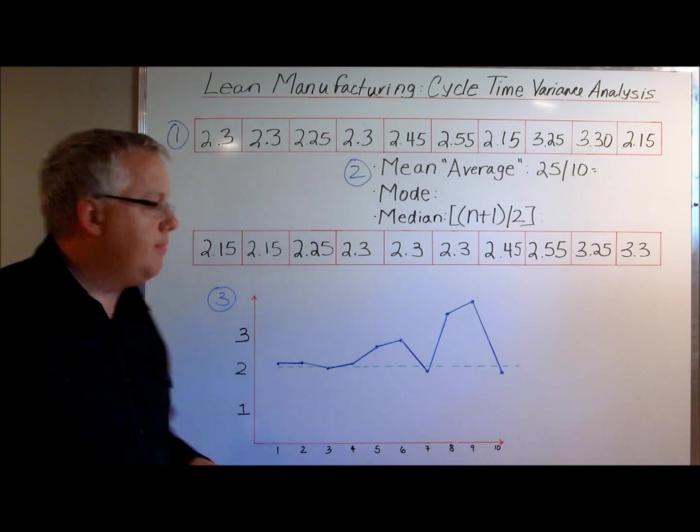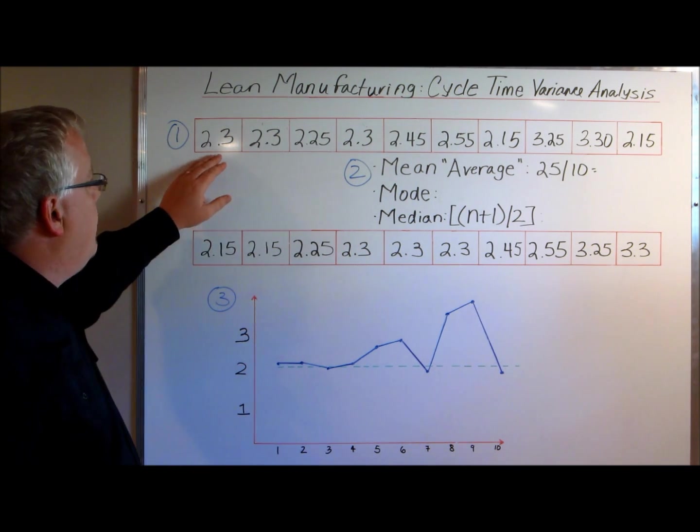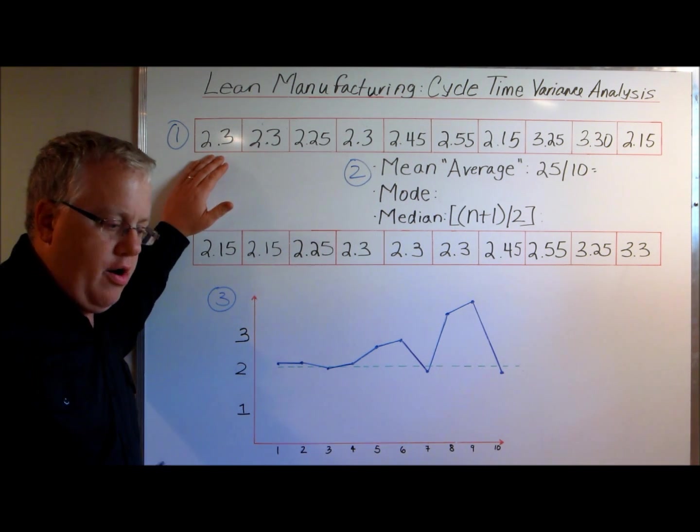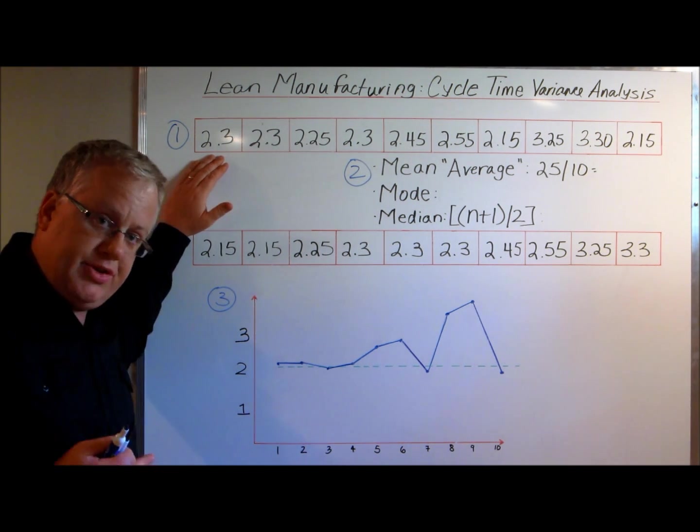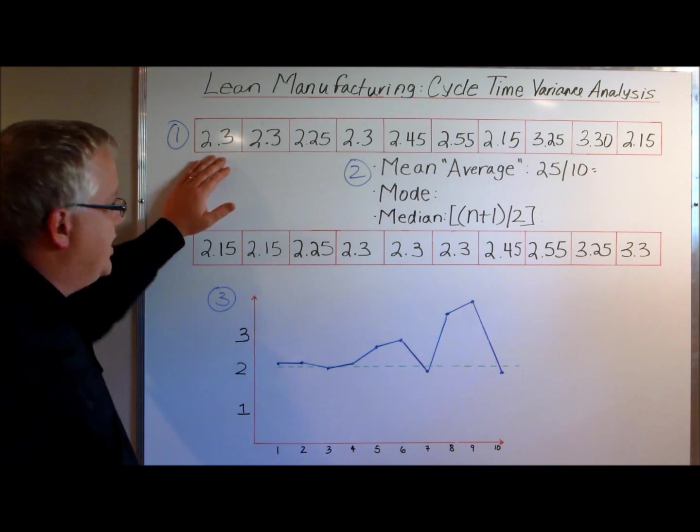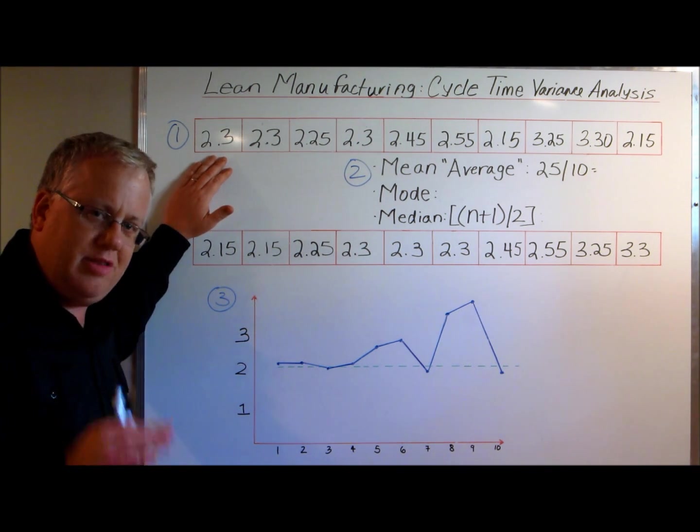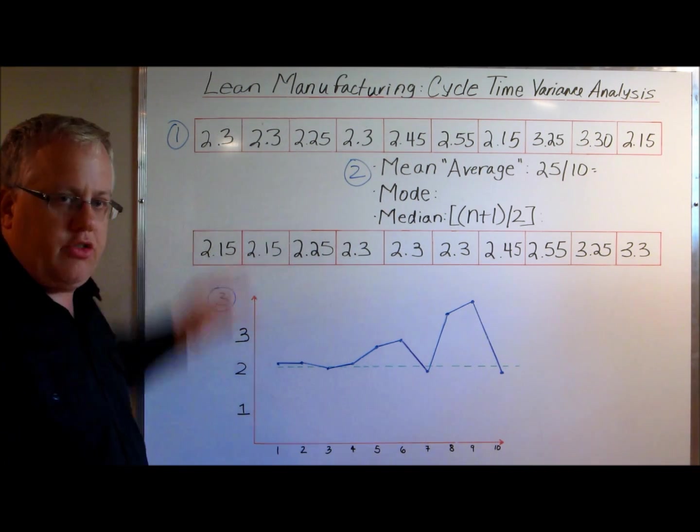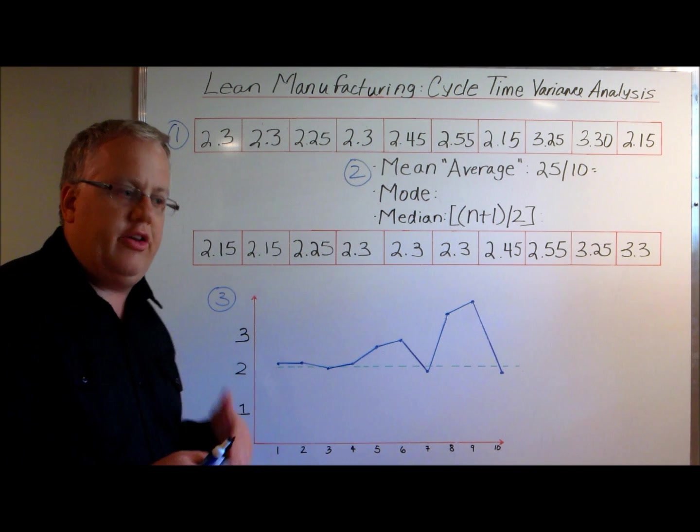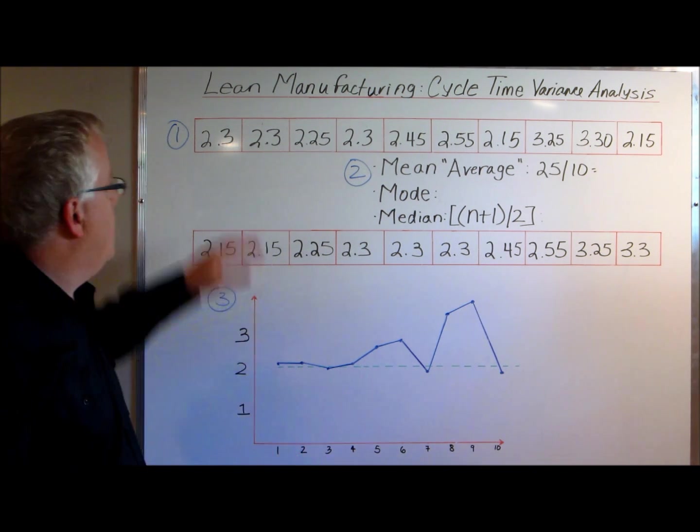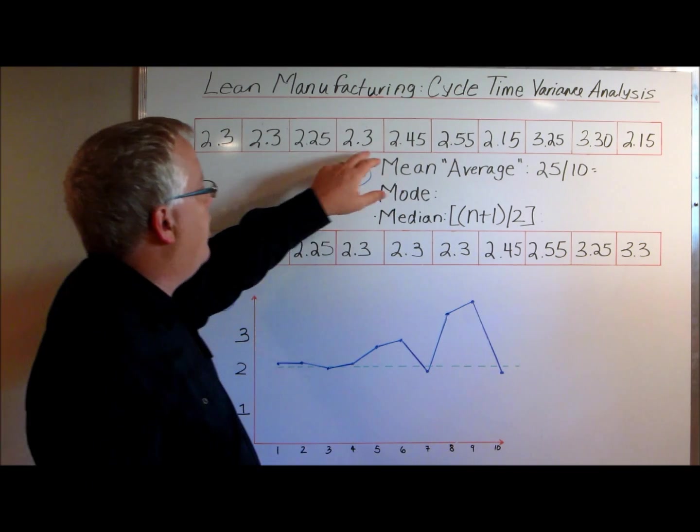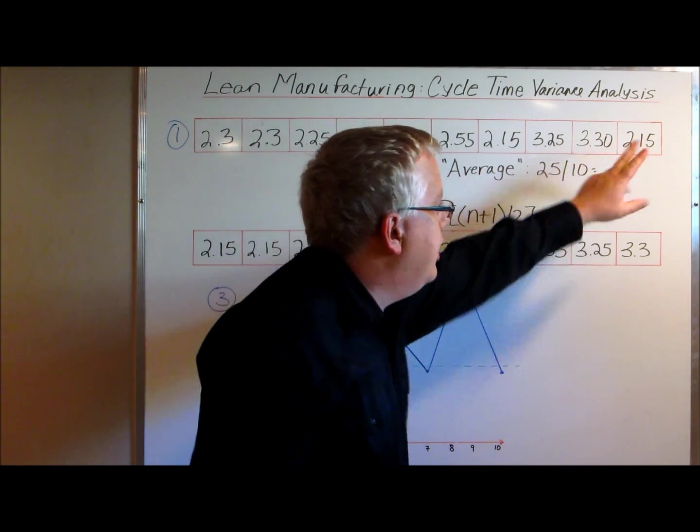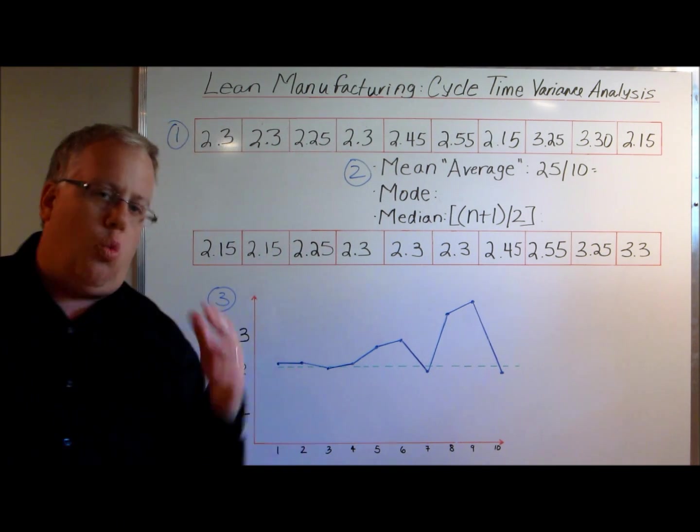What I've done here is these times do not include any takt time; they do not include setup time. For those of you that are Six Sigma certified or black belts, please understand this does not include takt time. I'm trying to simplify it as much as I can. The setup time and all the other stuff has been done, and these are cycle times for an individual operation in terms of start and stop. So two minutes and 30 seconds, two minutes and 30 seconds, 2:25, 2:30, 2:45, 2:55, 2:15, 3:25, 3:30, and 2:50.